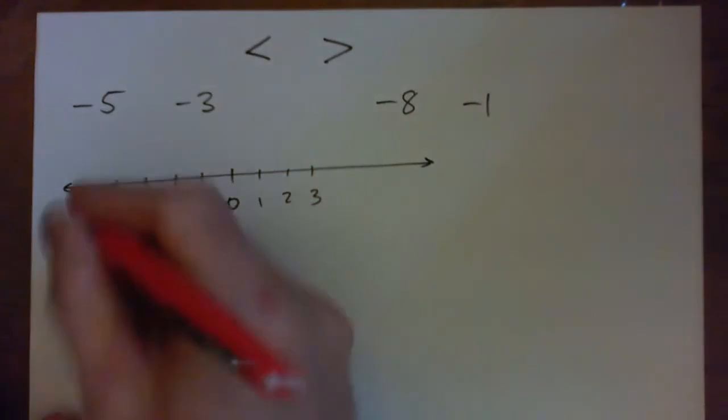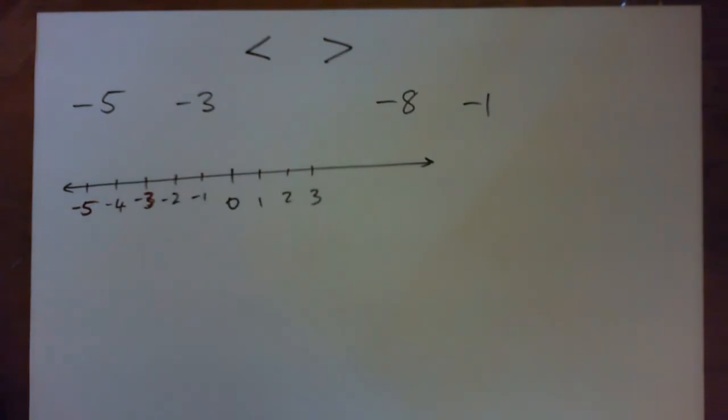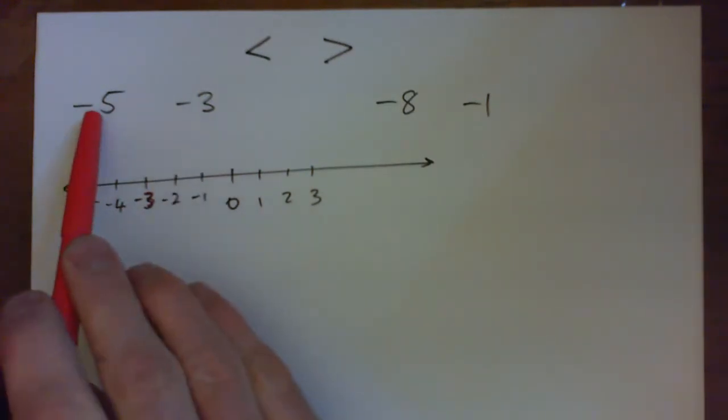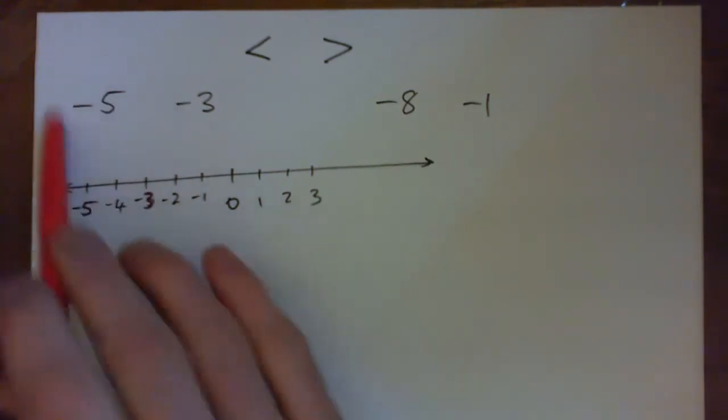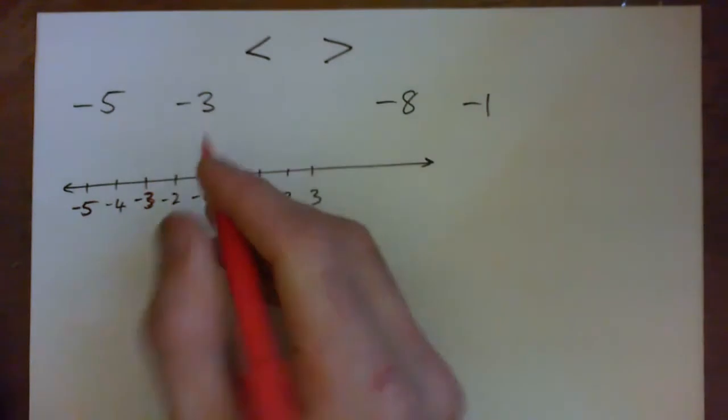So here's negative five, right, here's negative three. Now negative five is actually less than negative three because it's to the left on the number line. Another way to think about it is you would rather be in debt by three dollars than in debt by five dollars. It's a bigger debt, you're more in the hole, you're more in the red there, so that's a lesser number.